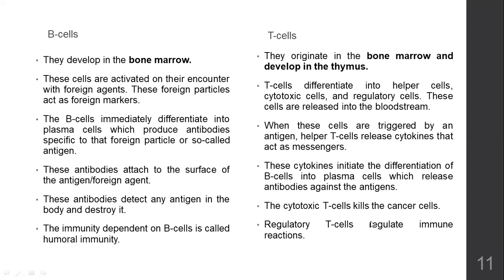Cytotoxic T cells kill cancer cells — 'cyto' means cell, 'toxic' means poisonous, so cytotoxic T cells are cells that can kill another cell. This is how your body regulates cancer — whenever a cancerous cell develops without your knowledge, a lot of cytotoxic T cells are eliminating those cancer cells so that you don't become a cancer patient, all happening without your knowledge. Regulatory T cells regulate the immune reactions.